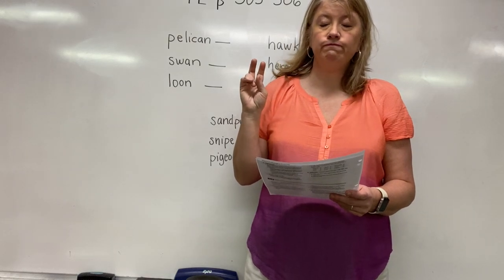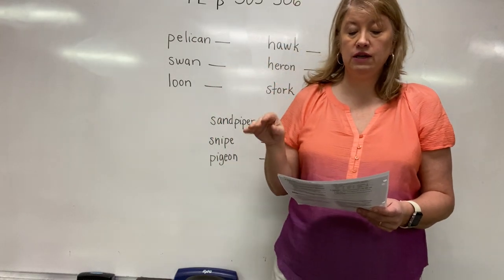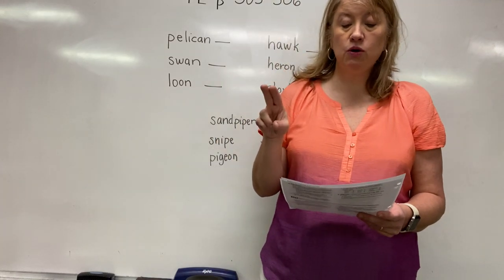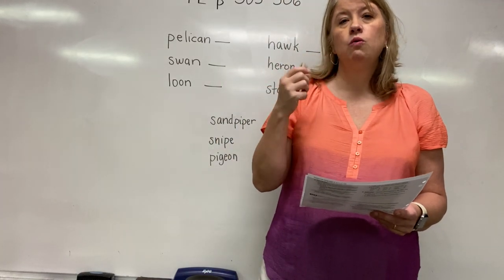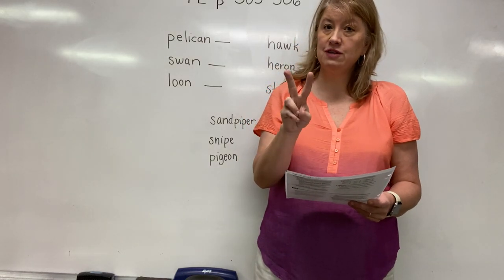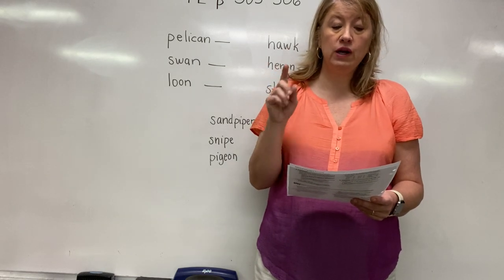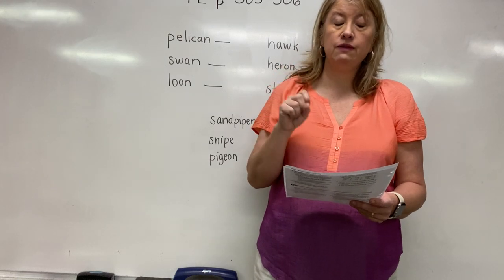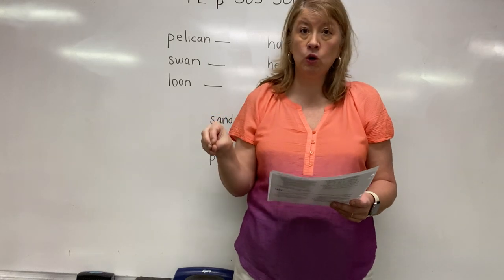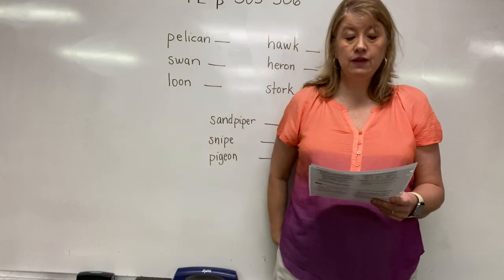We're going to review sentences using whether it's describing two things or more than two things. 'The Grand Canyon is blank than the Royal Gorge' - is it deep, deeper, or deepest? Remember, when we're talking about one thing it's deep, two things it's deeper, and three or more it's deepest. So the Grand Canyon is deeper than the Royal Gorge.